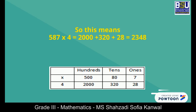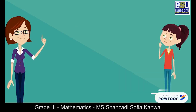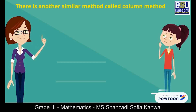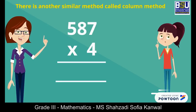It means teacher 587 multiplied by 4 is equal to 2000 plus 320 plus 28, so we get this answer. Correct. There is another similar method we can use to multiply 3-digit numbers with a single digit number. That is the column method.